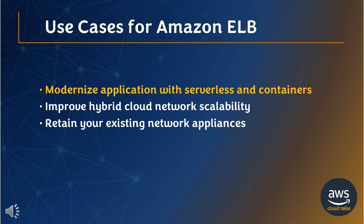To modernize applications with serverless and containers, you can scale modern applications to meet demand without complex configuration or API gateways. To improve hybrid cloud network scalability, load balance across AWS and on-premises resources using a single load balancer. To retain your existing network appliances, deploy network appliances from your preferred vendor while taking advantage of the scale and flexibility of the cloud.